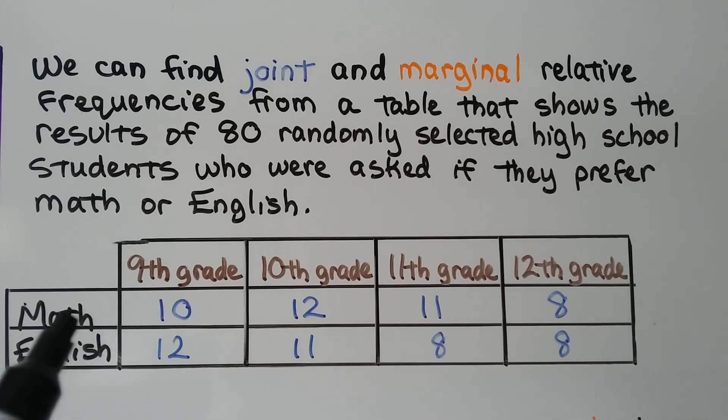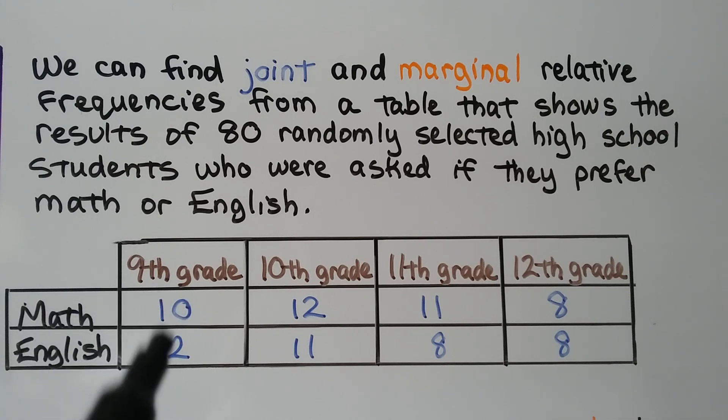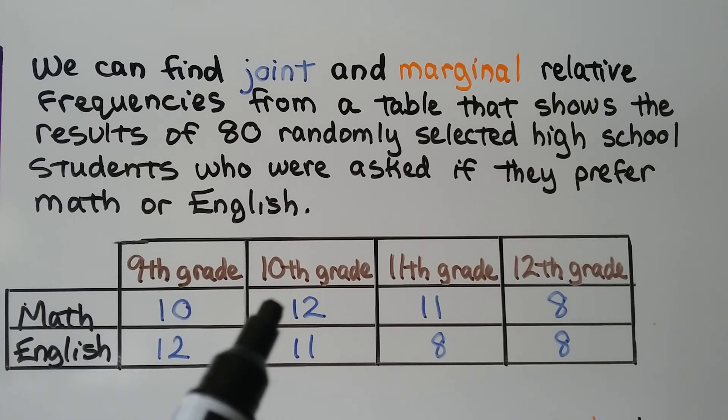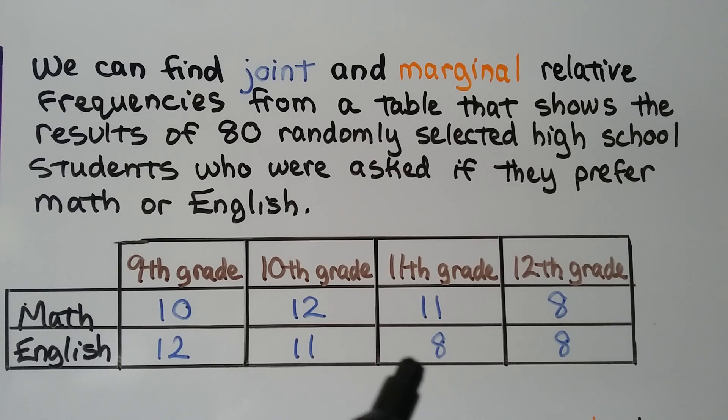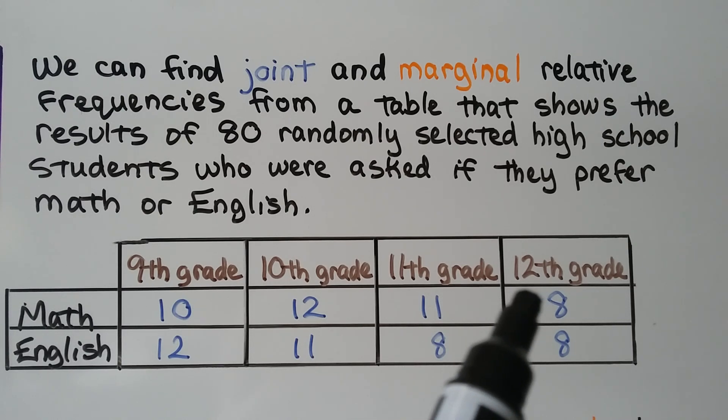For the ninth graders, ten said they prefer math and twelve said they prefer English. For the tenth graders, twelve liked math and eleven liked English. For eleventh grade we have eleven for math and eight for English, and for twelfth we have eight for math and eight for English.